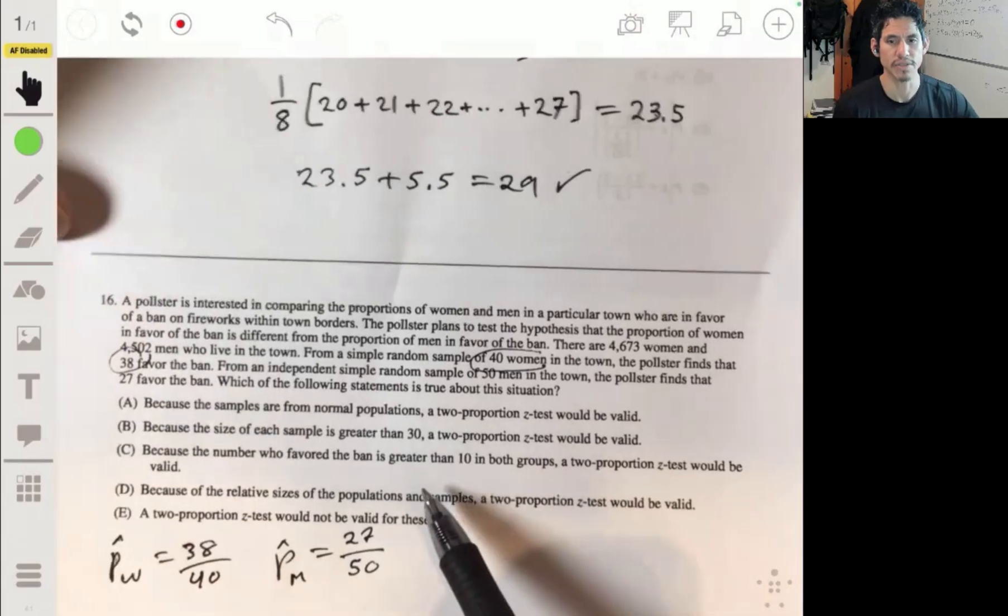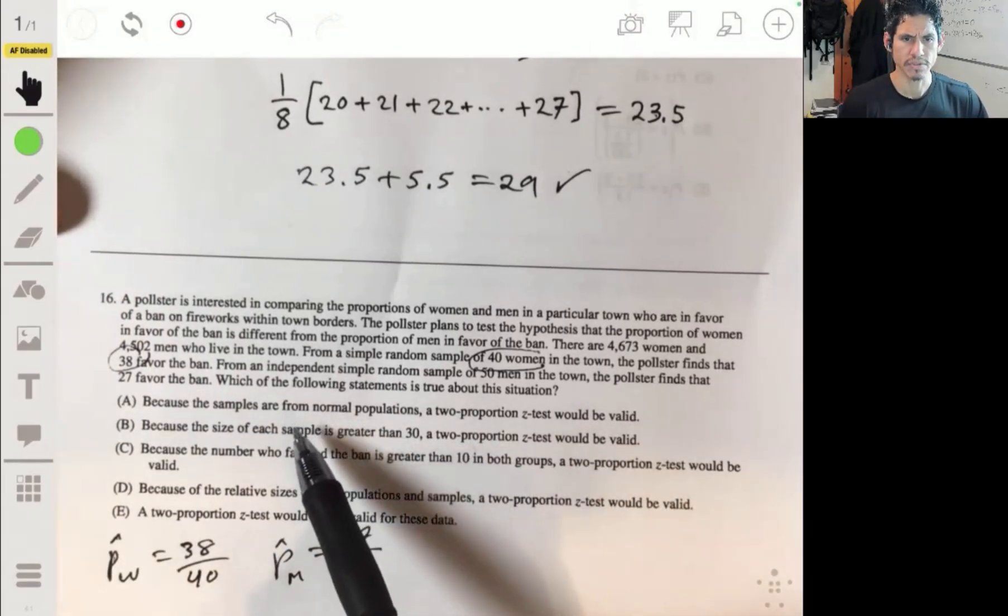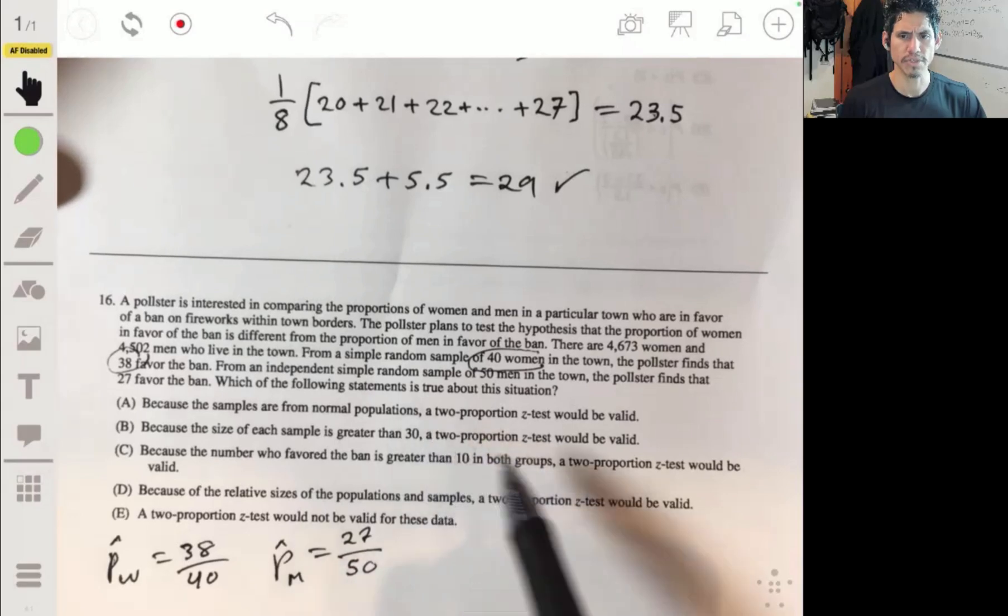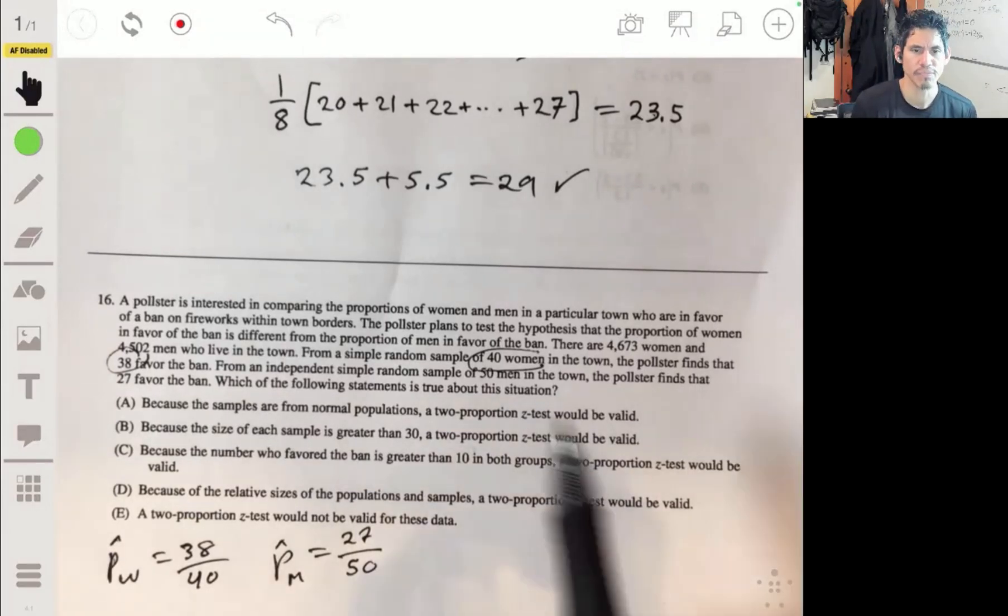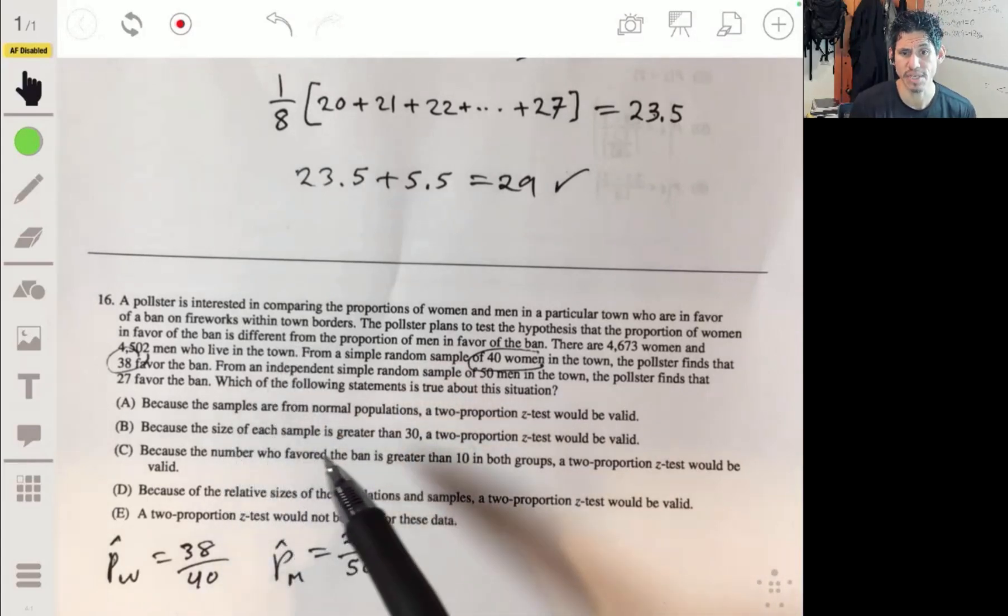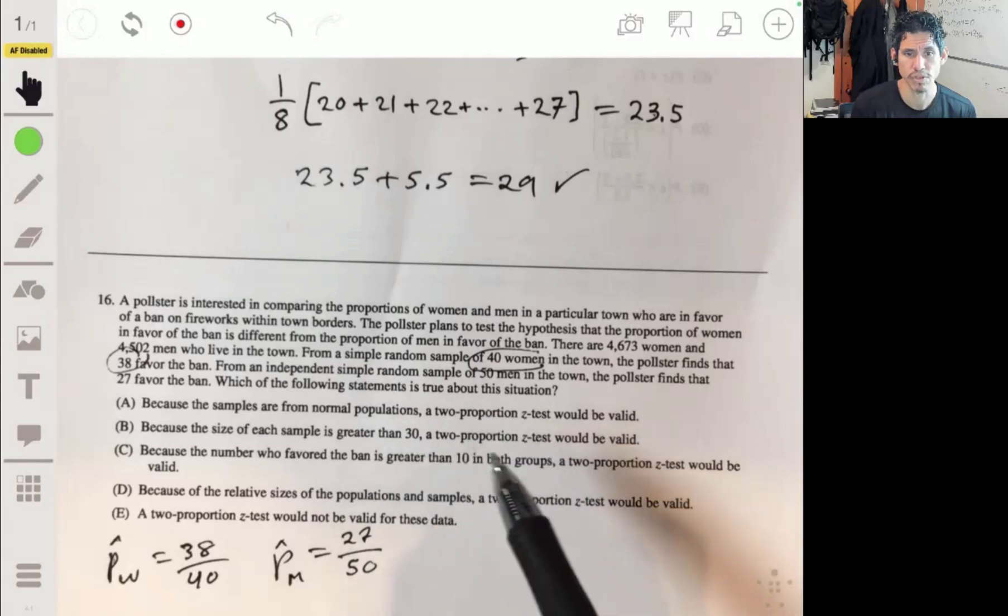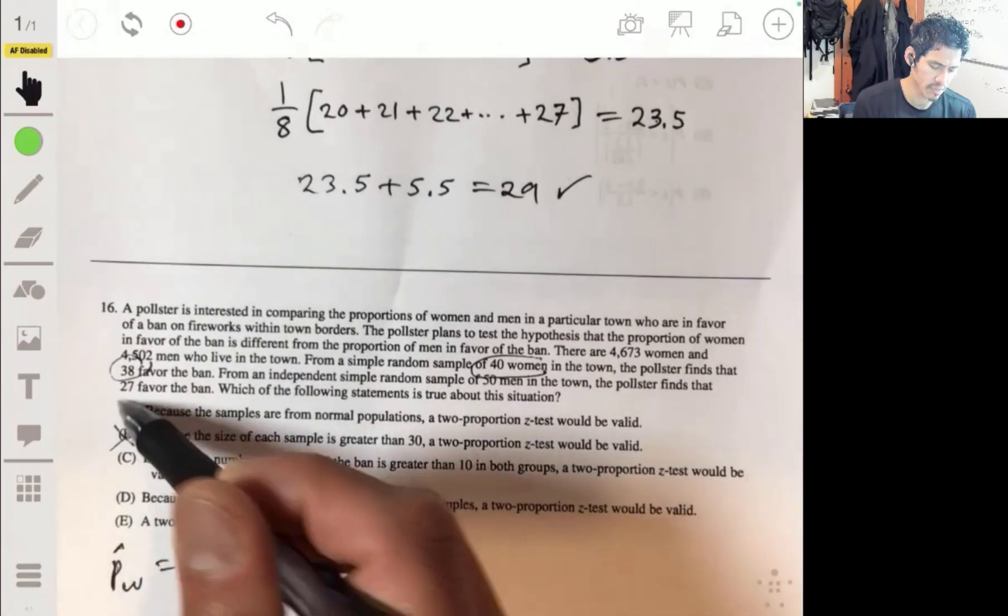Which of the following statements is true about this situation? Because the samples are from normal populations, a two-proportion Z-test would be valid. Nope, it's not true because there's more conditions. When you use a two-proportion Z-test, it depends on how the sample is collected and what you're trying to figure out. B: Because the size of each sample is greater than 30, a two-proportion... nope, this is way wrong because this is central limit theorem when you're talking about means.